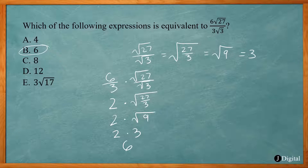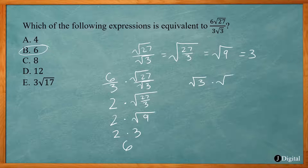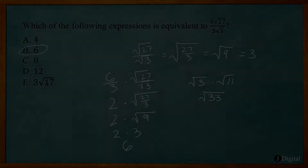So there are two rules to know. With division, you can combine radicals into one: square root of a over square root of b equals square root of a/b. Similarly, square root of 3 times square root of 11 equals square root of 33 — you multiply them together to make one radical. That's another property you should know.